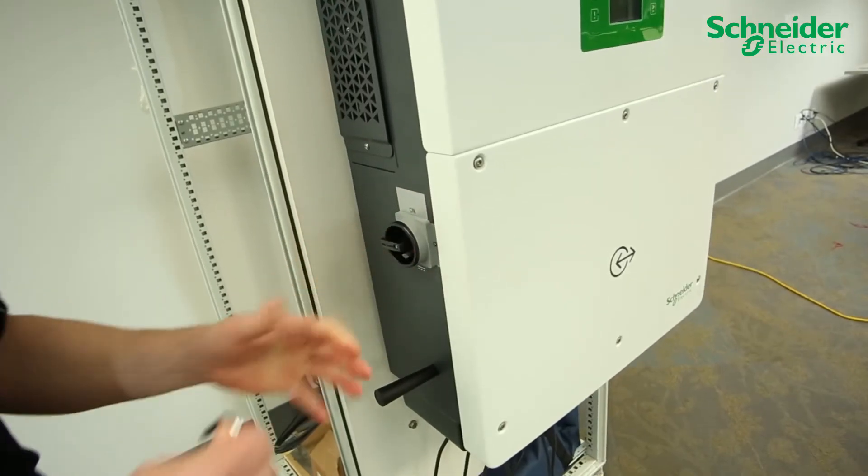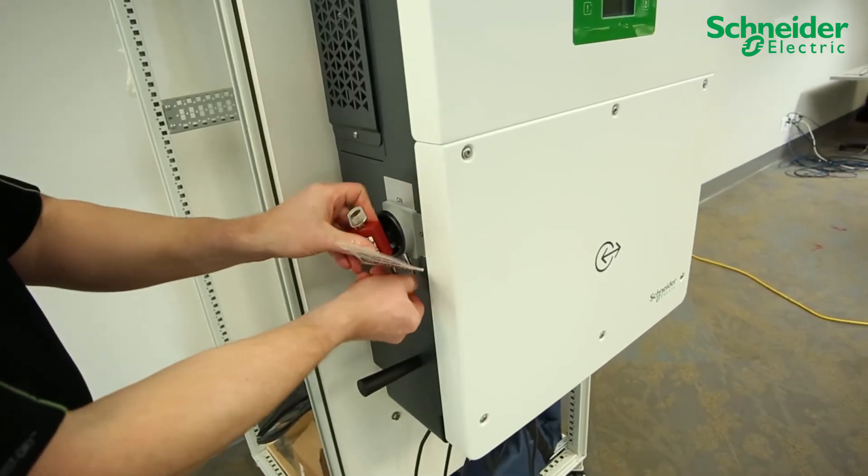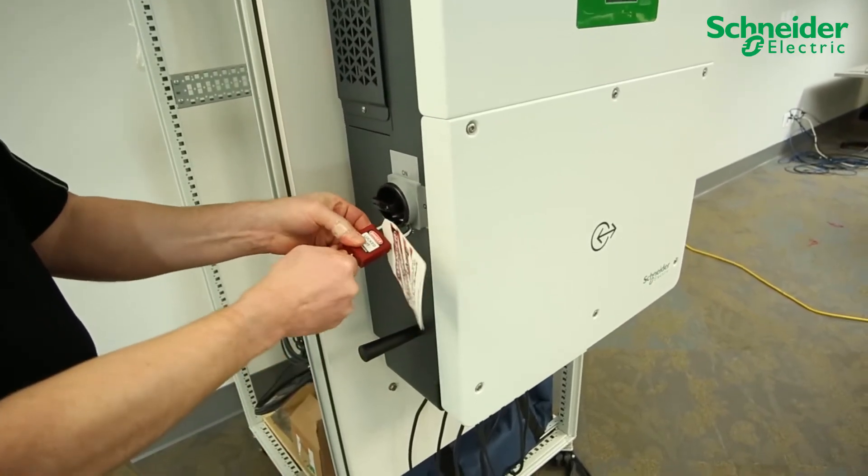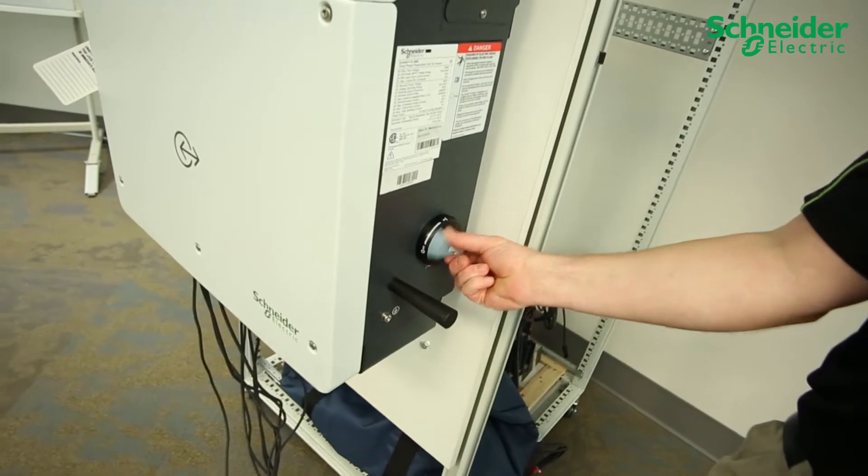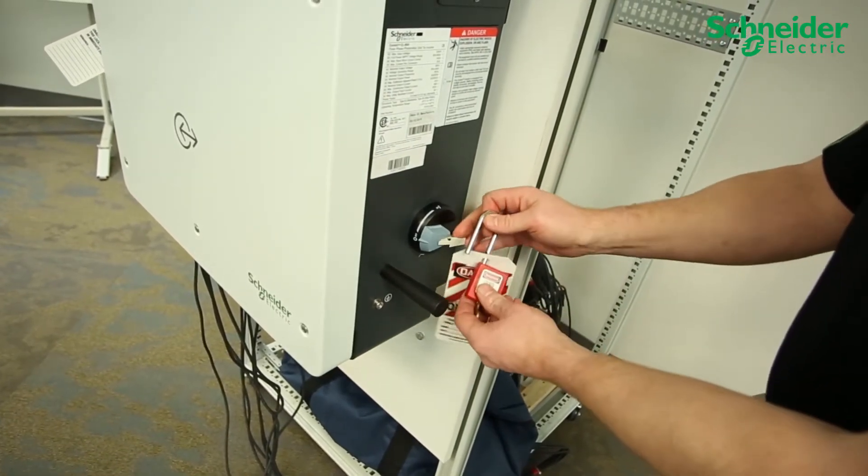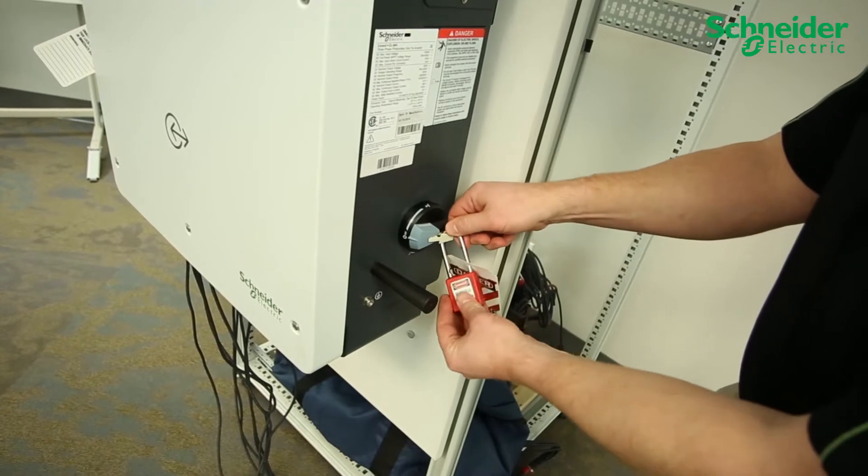Turn the DC disconnect to the off position, and on the CL60A perform LOTO. On the CL60A only, turn the AC disconnect to the off position and perform LOTO.